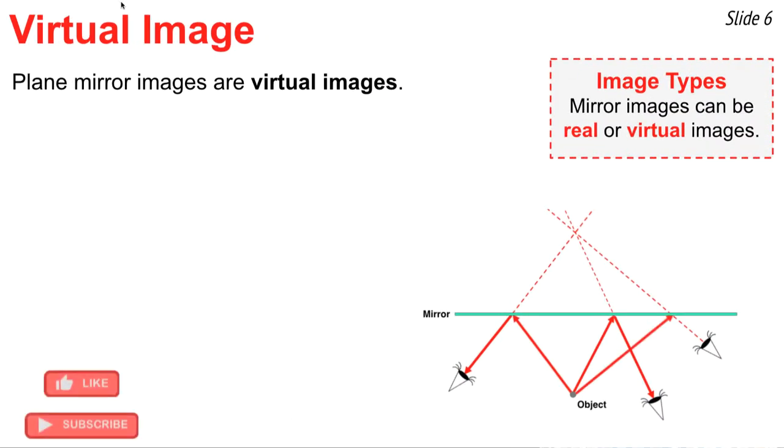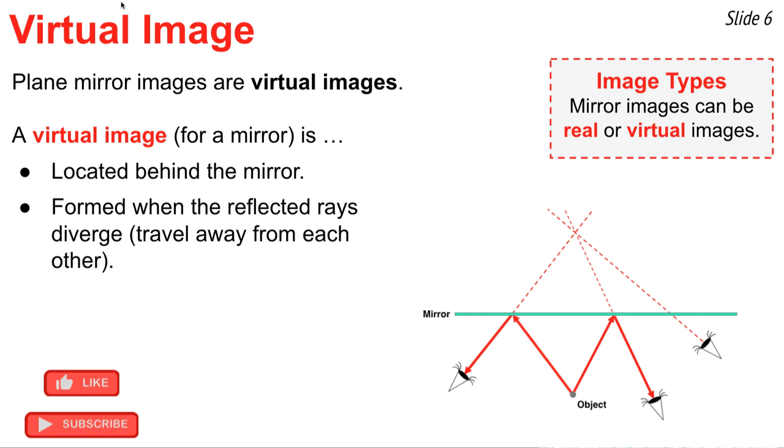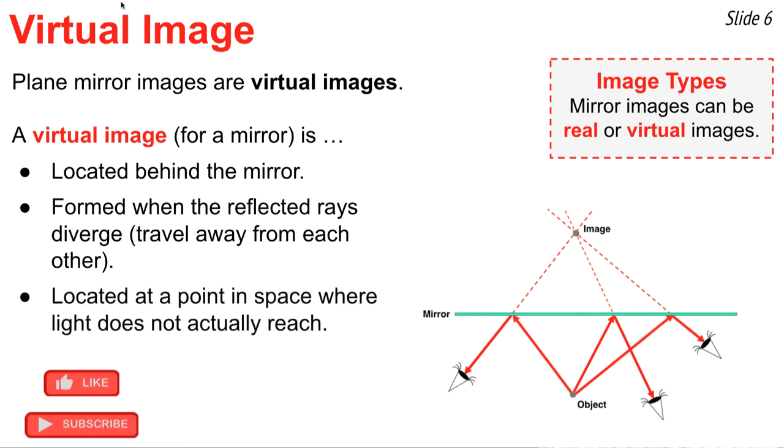For plane mirrors, these types of images are called virtual images. Images of mirrors can be one of two types, real or virtual images. We'll discuss real images at a later time when we begin to discuss curved mirrors. But for plane mirrors, the virtual image is always located behind the mirror. It's formed whenever you have reflected rays traveling away from each other or diverging after they reflect off the mirror. It's located at a point in space where light does not actually reach. If you went behind the mirror searching for some light, you wouldn't find any light back there. The light's reflected off the mirror, not passed through it. And virtual images are always the images that are formed by a plane mirror.